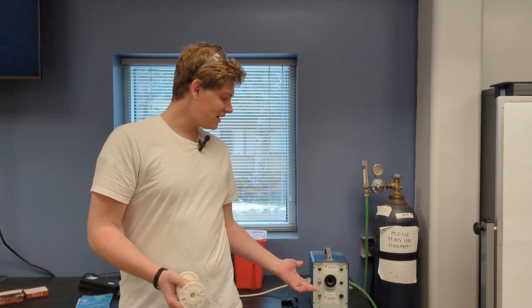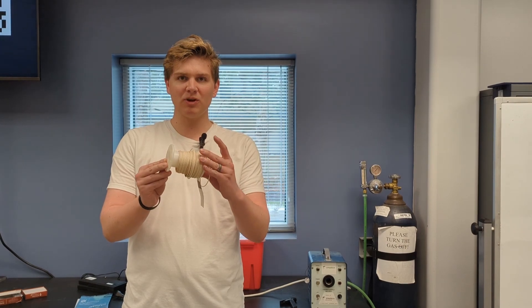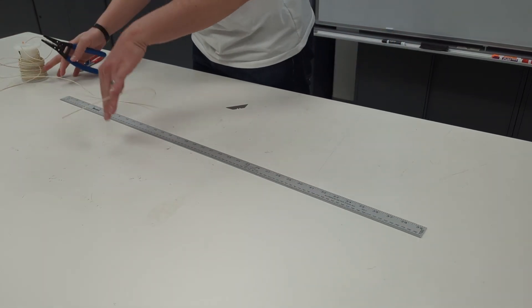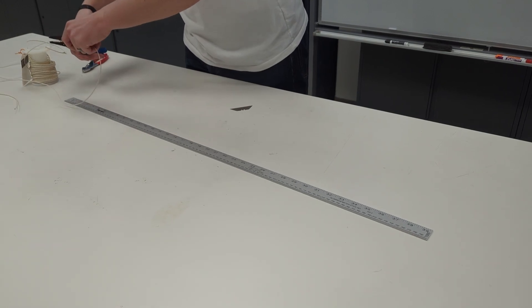This is a tutorial on how to use the Dynatec model 116 thermocouple welder. Begin by preparing some thermocouple wire. Measure out and cut a sufficiently long strand of thermocouple wire. Generally 3-4 feet will suffice.